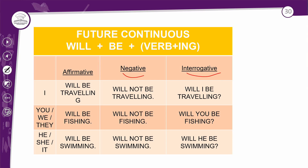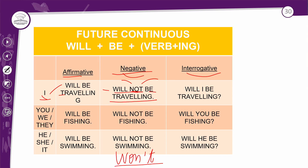Vamos relembrar o futuro contínuo — só vou trazer as formas negativas e interrogativas. Nas frases negativas, a única coisa que vai acontecer é a presença do 'not'. Esse 'not' vai ficar entre o verbo 'will' e o verbo 'to be'. 'I will be traveling' — eu estarei viajando. 'I will not be traveling' — eu não estarei viajando. Ou então 'won't', que é a contração entre 'will' e 'not'. A diferença da negativa para a afirmativa é apenas a presença do 'not' entre o 'will' e o 'be'.